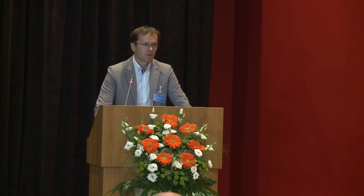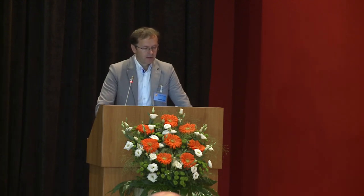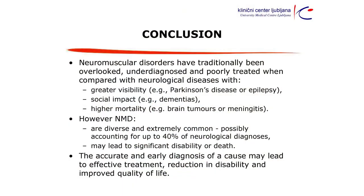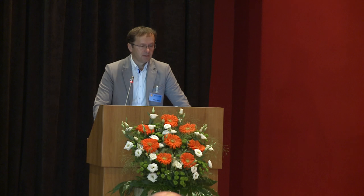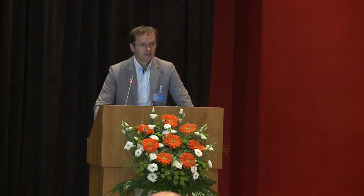To conclude: neuromuscular disorders have traditionally been overlooked, underdiagnosed, and poorly treated compared with neurological diseases with greater visibility like Parkinson's disease or epilepsy, greater social impact like dementia, or higher mortality like brain tumors or meningitis. However, they are diverse and extremely common, covering about 40% of neurological diagnoses and leading to significant disability and even death. Accurate and early diagnosis may lead to effective treatment, reduction in disability, and improvement in quality of life — and clinical neurophysiology helps with this.